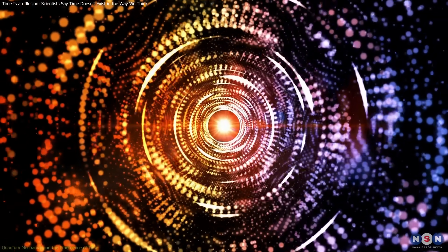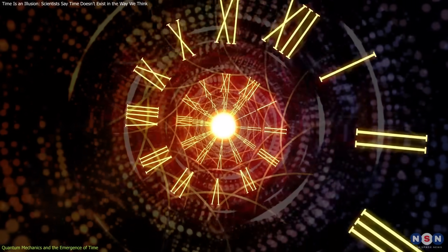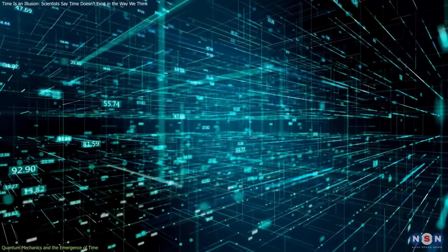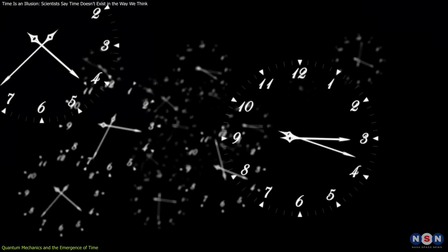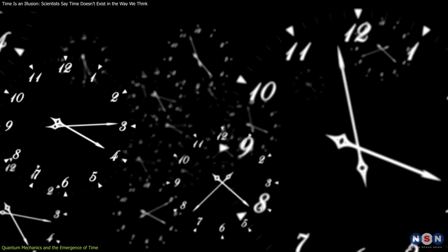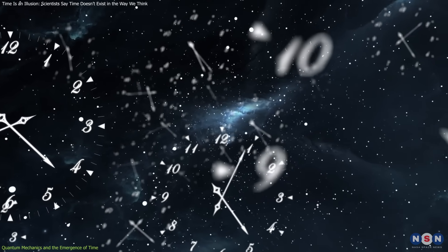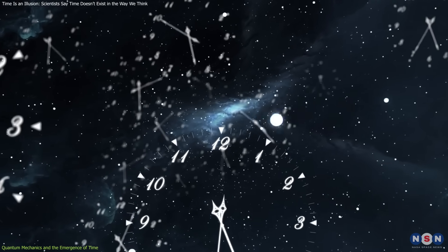In quantum mechanics, time is often treated as an external parameter, a backdrop against which the probabilities of different outcomes evolve. This treatment contrasts sharply with the relativistic view, where time is intertwined with space and influenced by gravity.